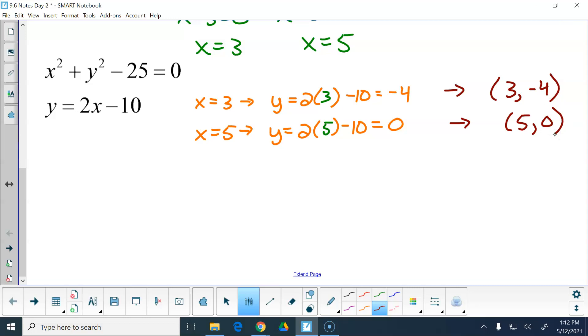Checking them back in our original equations. 3 squared is 9, negative 4 squared is positive 16. 9 plus 16 is 25, minus 25 is 0, and 0 is equal to 0. 2 times 3 is 6, minus 10 is negative 4. Check out math.